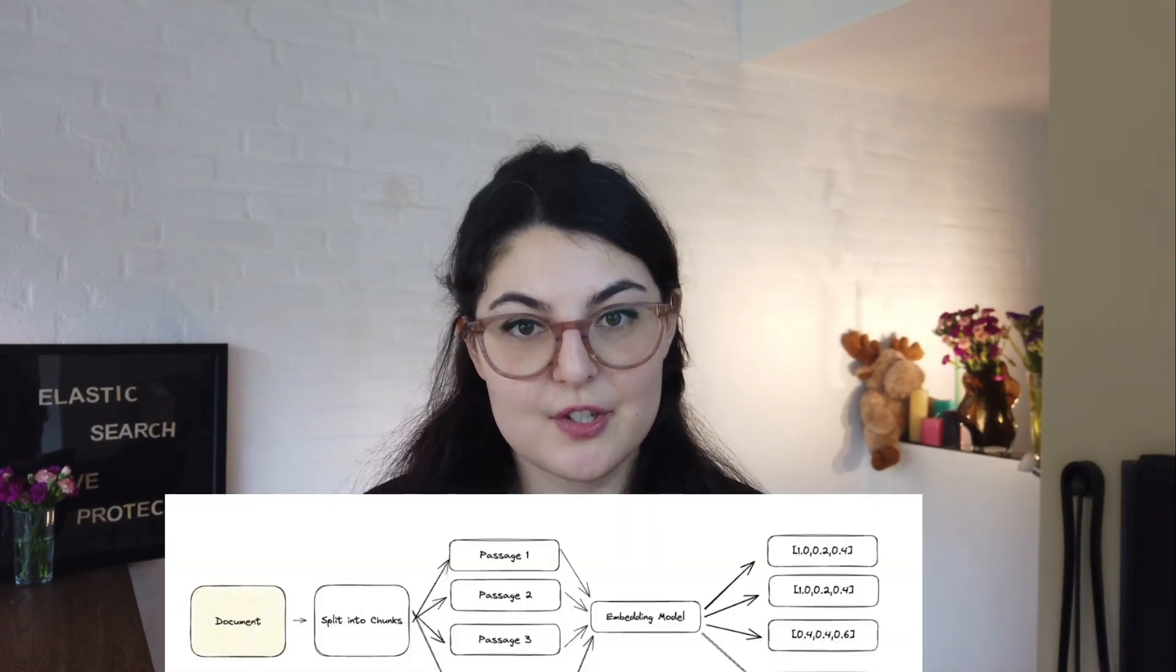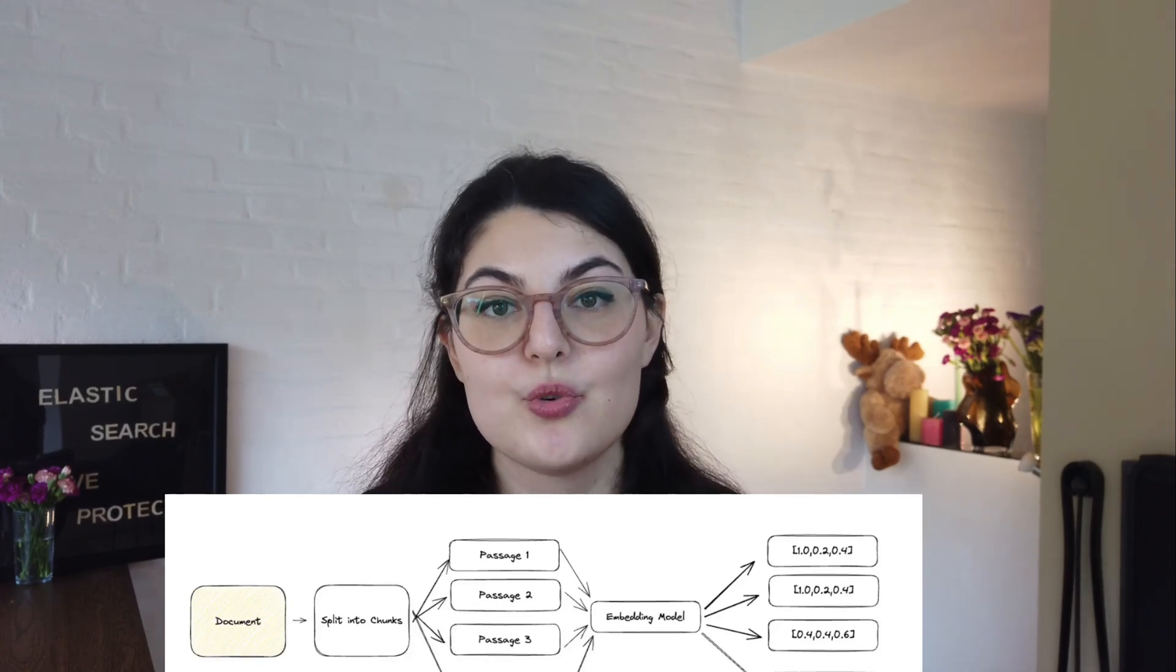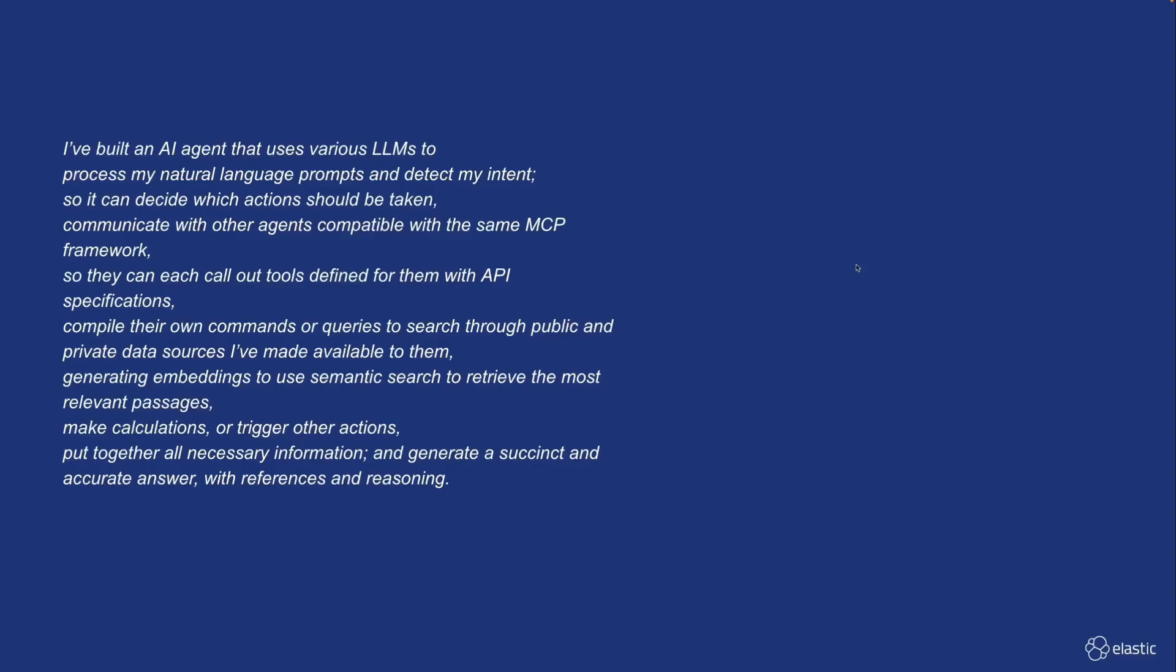Now, once you understand the vector space and what we call embeddings, which is transforming these words into a vector point that is able to exist in this multidimensional area, we're also able to do searches. Let's break it down visually.